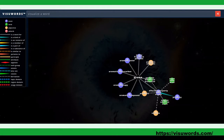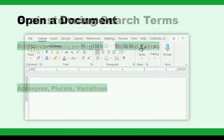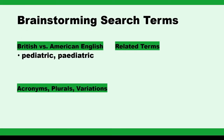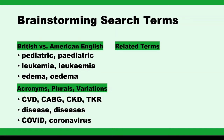To start brainstorming, it will help to keep a document and just start making a list. For any keywords you come up with, think about British or American English spelling variations, acronyms, plurals, hyphens, and other variations, and add those too.